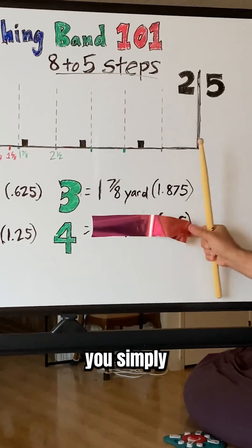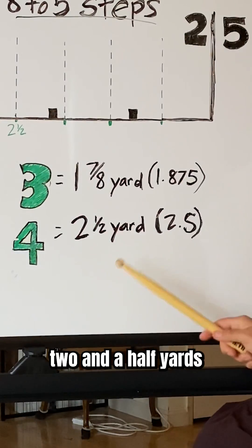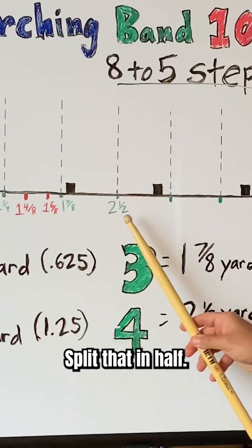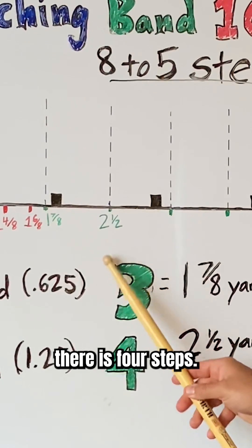And lastly, to find 4, you simply need to find 2 and a half yards, 2.5 yards. Go 1 yard, 2 yards. Split that in half. That right there is 4 steps.